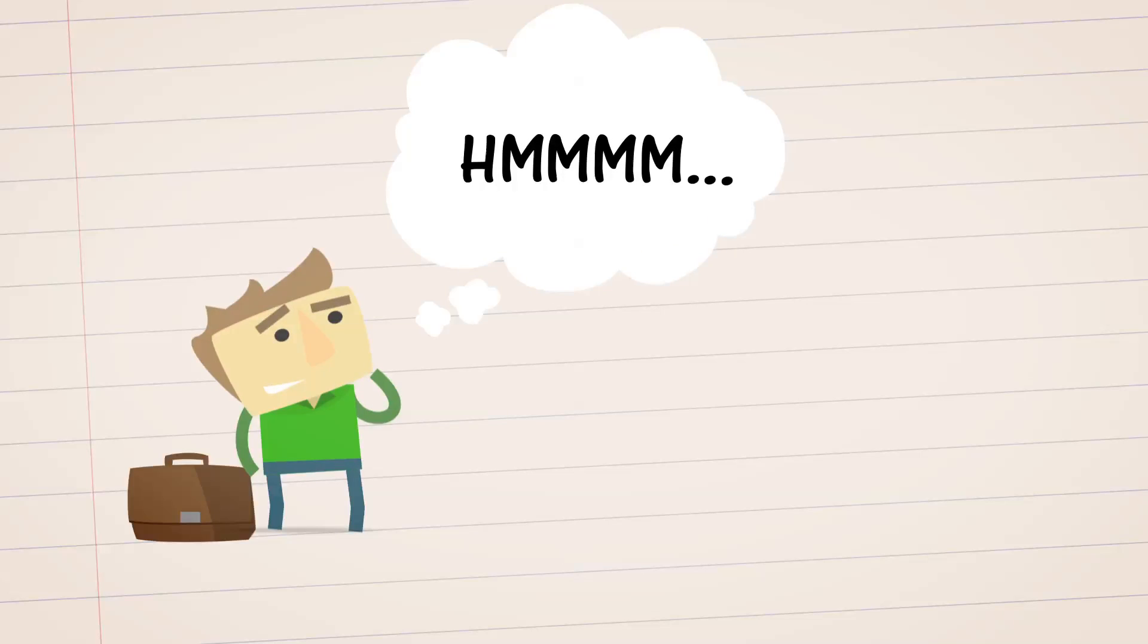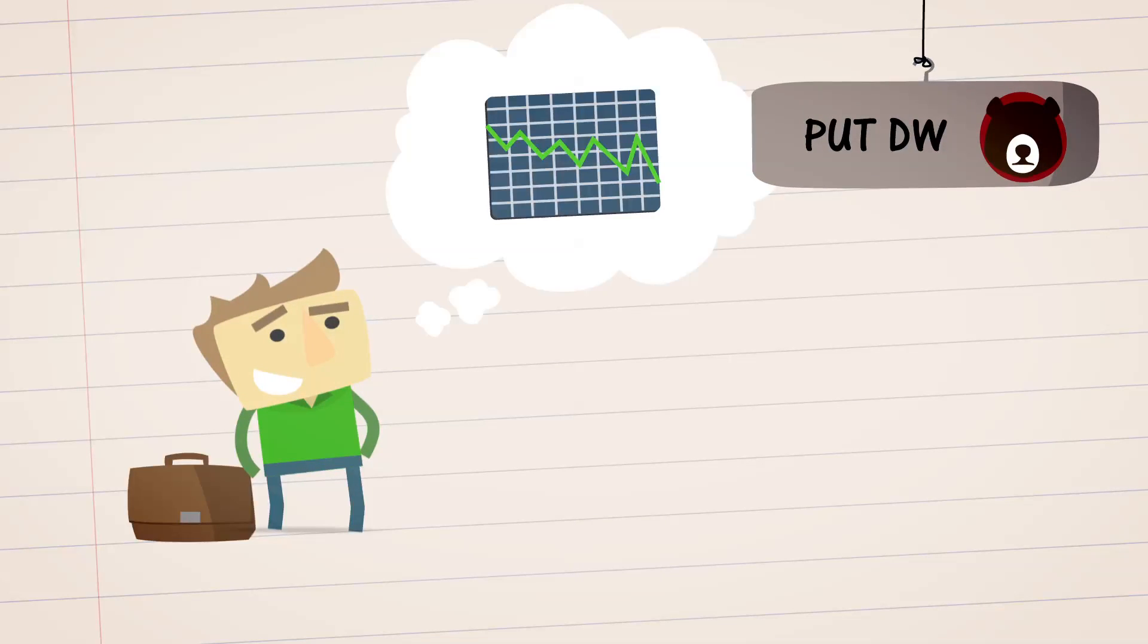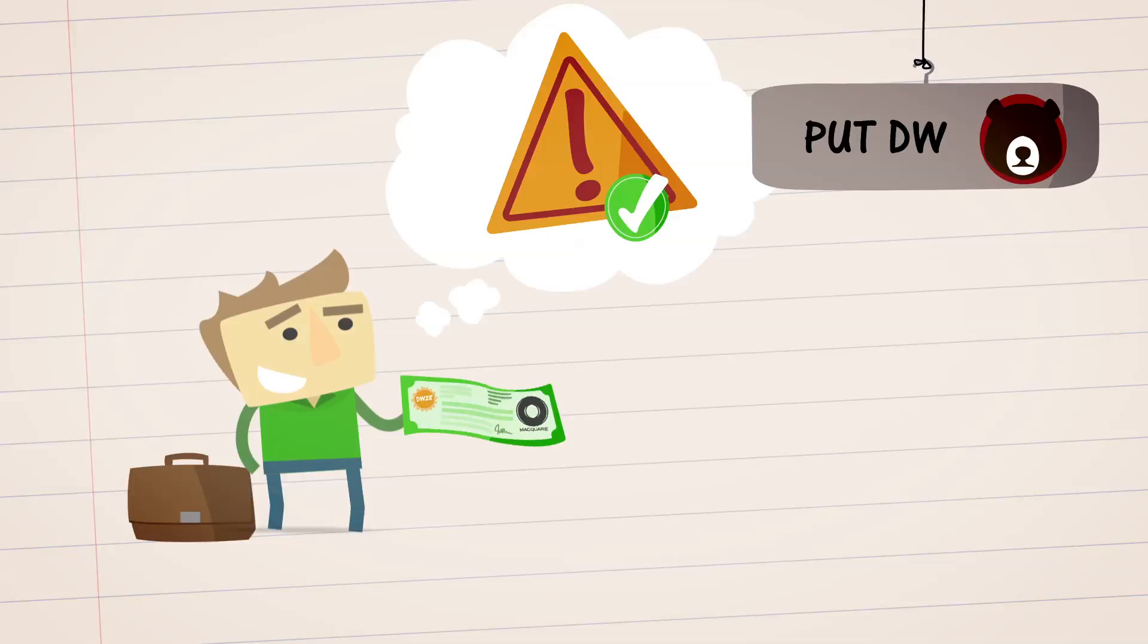Put warrants are a very useful tool if you think a certain stock will drop and you want to profit from that movement. Because of this, some investors use put warrants as a way of mitigating risk in their portfolio. Those are the basics.